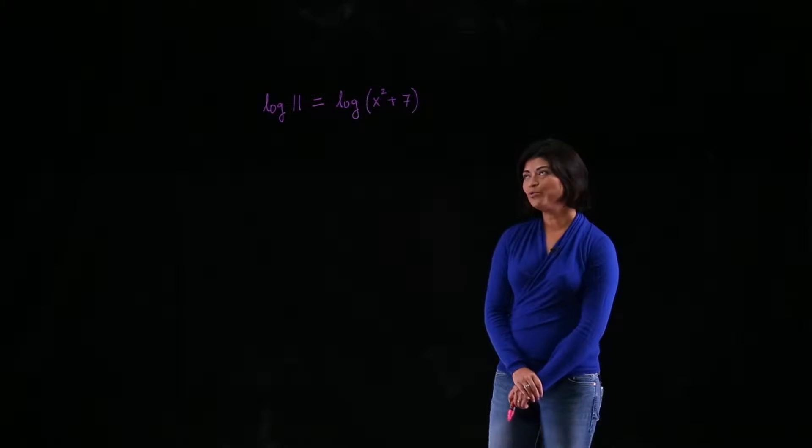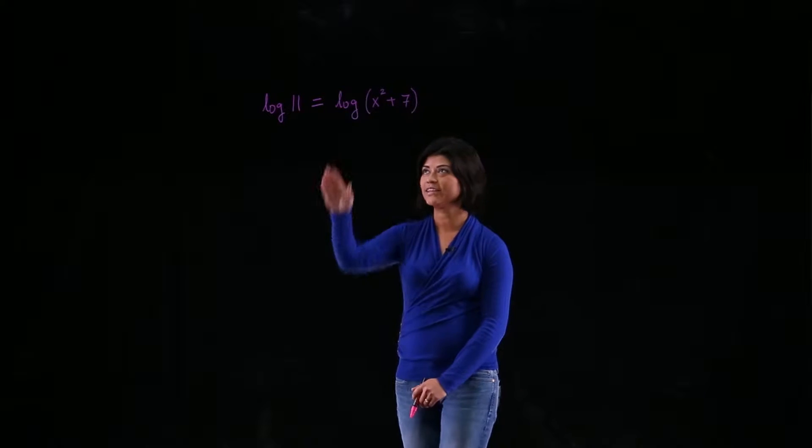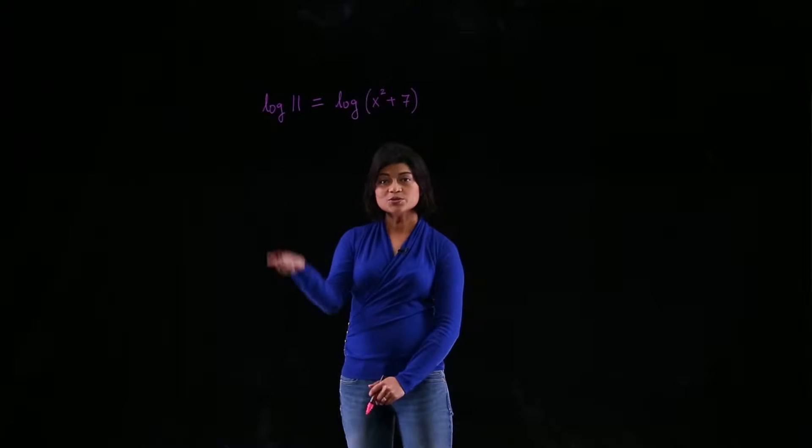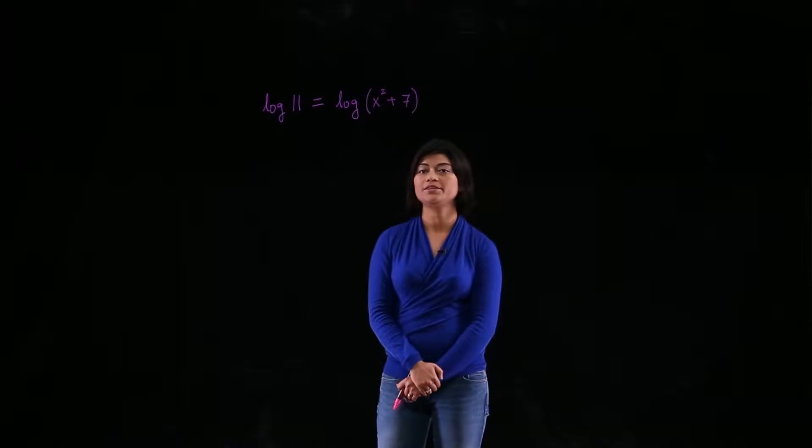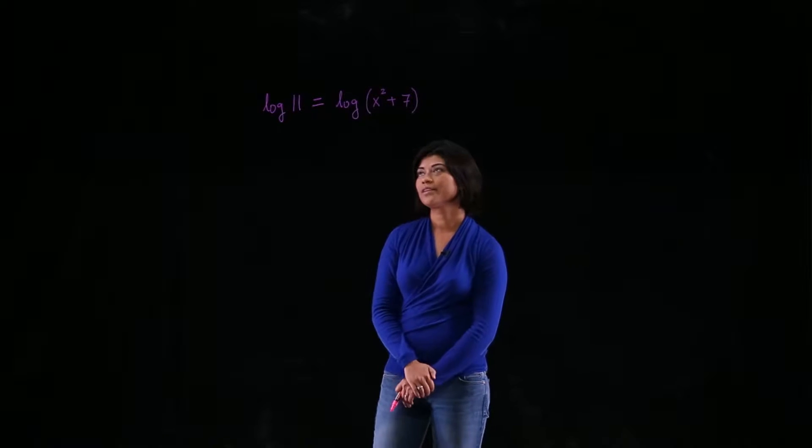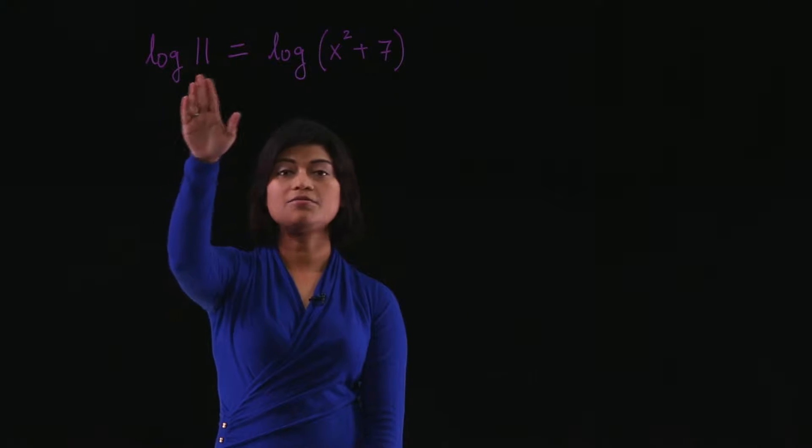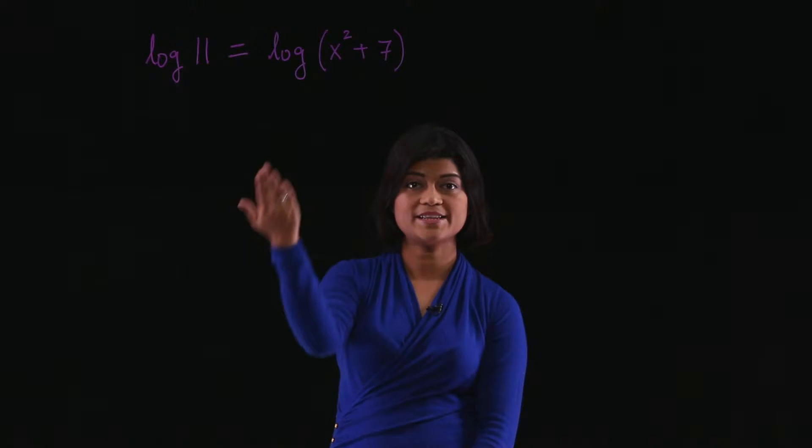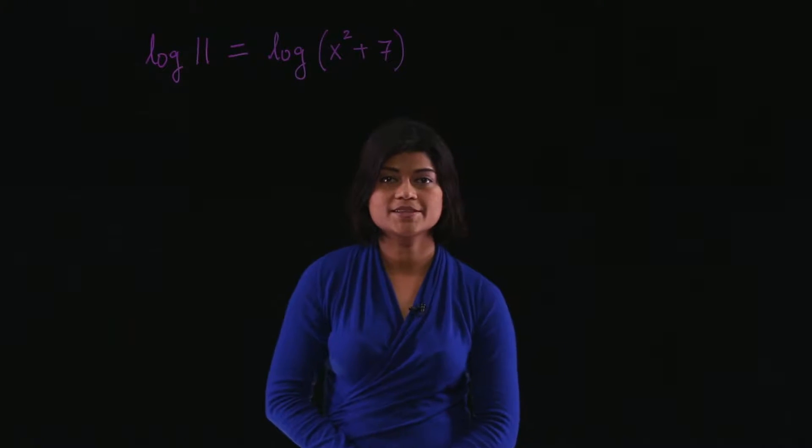Hello, I'm Papiya. In this problem, we have to solve for x given this equation using the one-to-one property of logarithm function. The equation is log 11 equals log of x squared plus 7, and we have to solve for x.